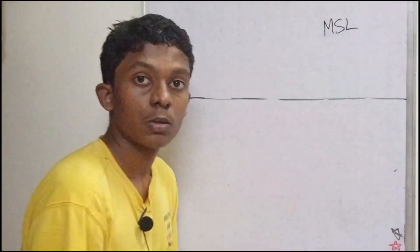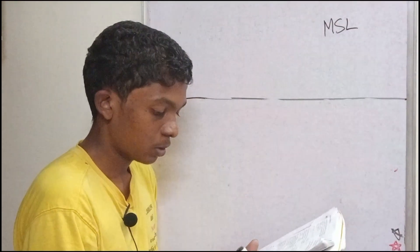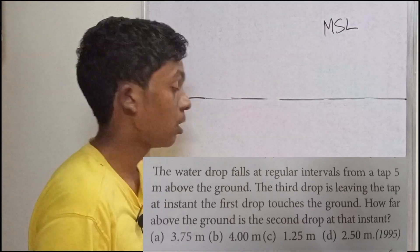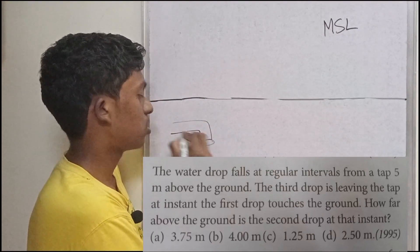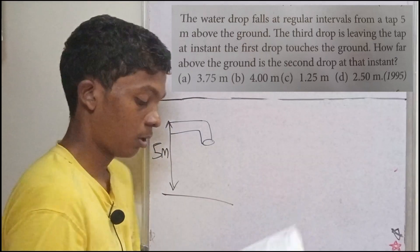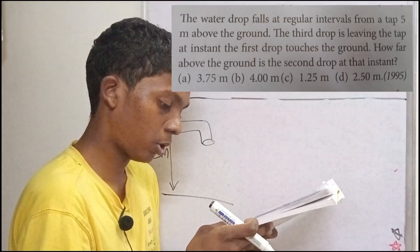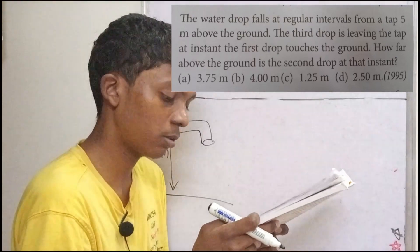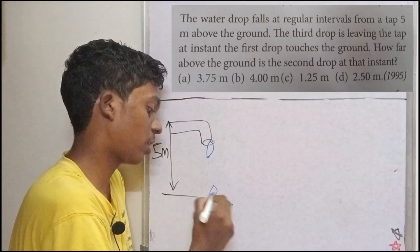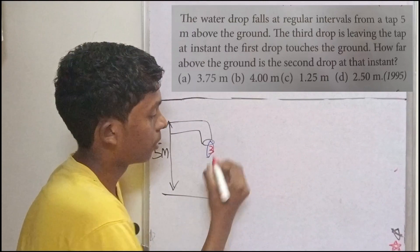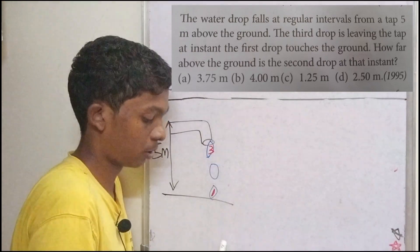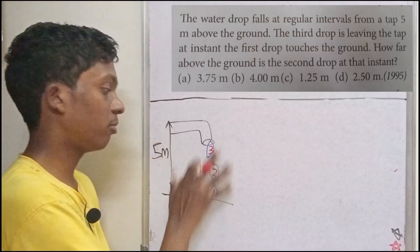Now let's go through the third PYQ. A water drop falls at regular intervals from a tap 5 meters above the ground. The third drop is leaving the tap at the instant the first drop touches the ground. There is also a second drop somewhere in between.